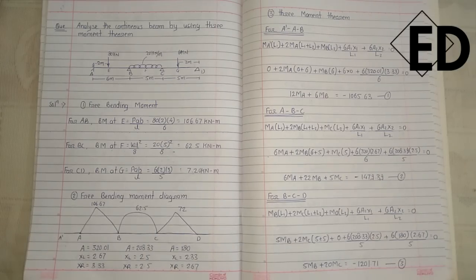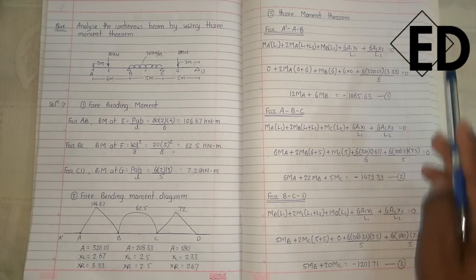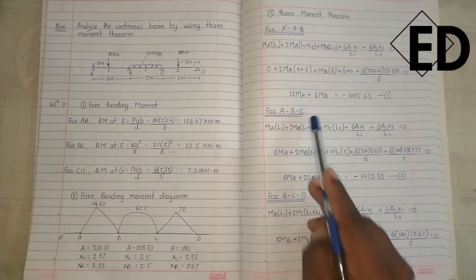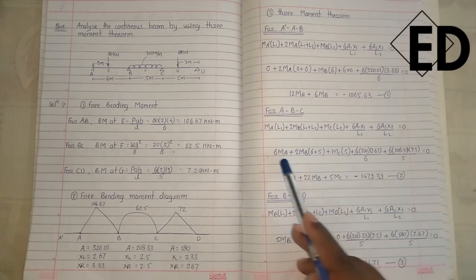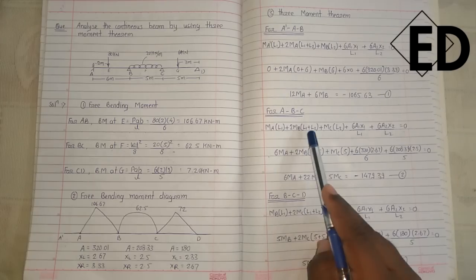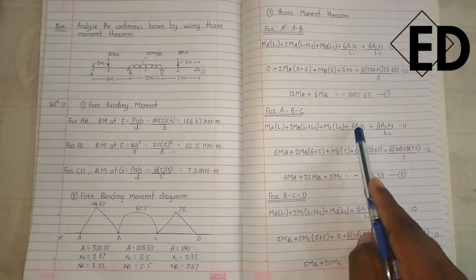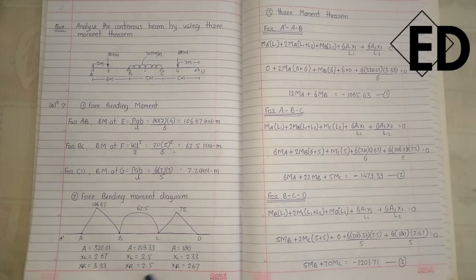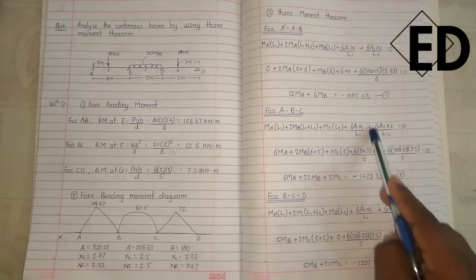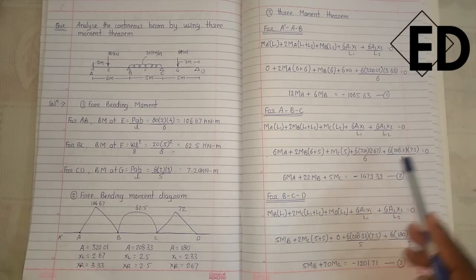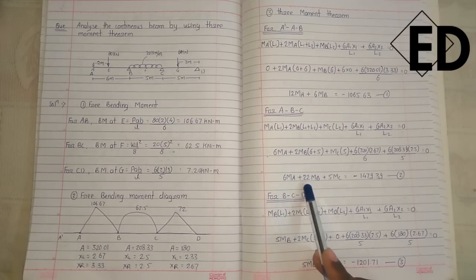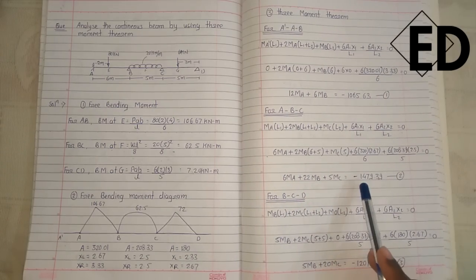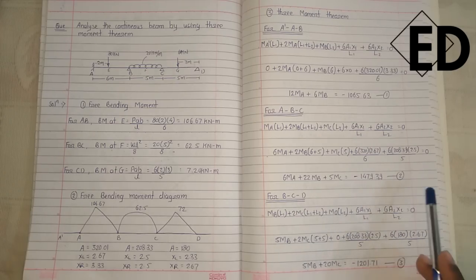Similarly, the Three Moment Theorem equation is applied for span ABC. Putting the values of L1, L2, 6A1x1/L1 from the first diagram and 6A2x2/L2 from the second diagram, and rearranging, we get: 6 M_A + 22 M_B + 5 M_C = −1479.39 — this is equation 2.